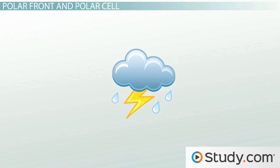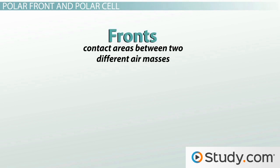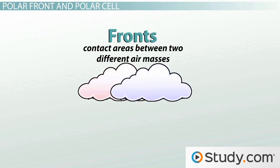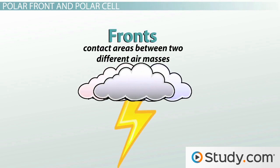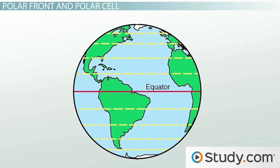The other interesting thing that these two different temperature cells create when they come together is storms. As we learned in another lesson, fronts are contact areas between two different air masses. When these air masses meet, they're so different that it's almost like they're fighting about the weather, and the storm is like their conflict. The polar front is no exception, and these areas on Earth are well known for their unpredictable storms.